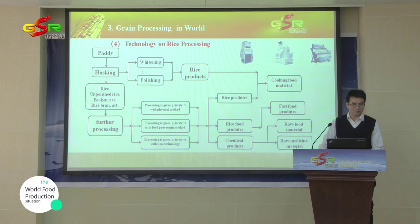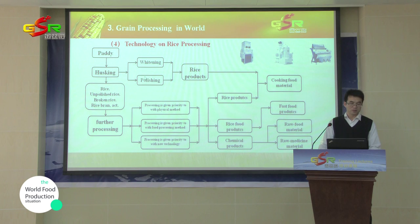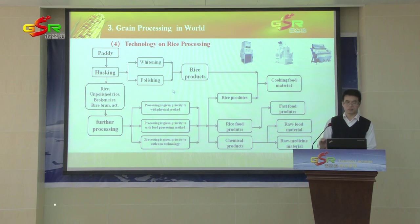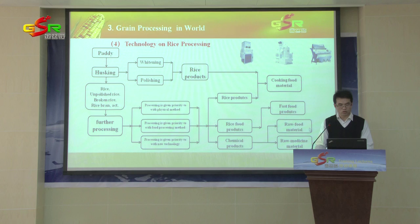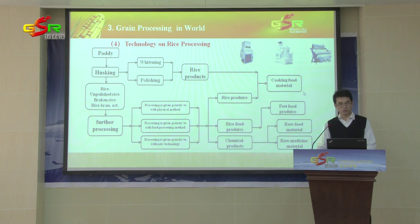This is one of the main rice processing processes. After harvesting, we can get different products such as cooking food materials, fast food products, raw food materials, and raw medicine materials.